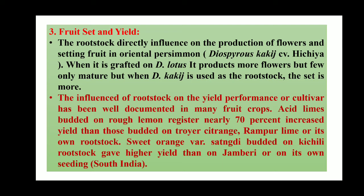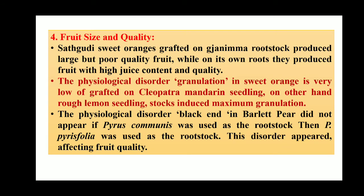In acid lime budded on rough lemon rootstock, there is nearly 70 percent increased yield compared to those budded on other citrus rootstocks. Because of grafting on different cultivars of rootstock or using different soil, we can have a difference in yield. It is also having an effect on fruit size as well as quality — Sathgudi sweet orange grafted on Jambheri rootstock produced large but poor quality fruit.